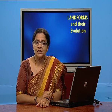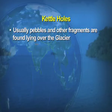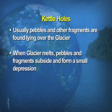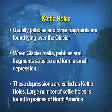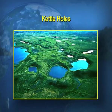The last depositional feature is kettle holes. When the glacier melts, pebbles and other fragments lying over the glacier subside and form small depressions. These depressions are called kettle holes, and a large number of kettle holes are found in the prairies of North America — the temperate grassland of North America. On the screens, you can see a visual of the kettle holes, which are depression areas.